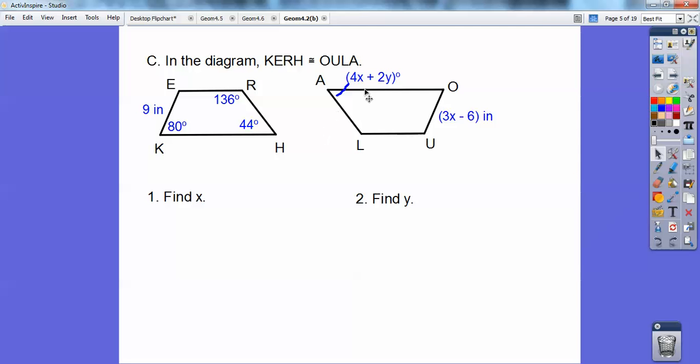This one has X and Y. I'm going to deal with this X right here. This just has X. So OU, OU would correspond to the first and second letter, so the first and second letter KE. So it's going to equal this 9 right here. So 3X minus 6 equals that 9, and you get X equals 5.